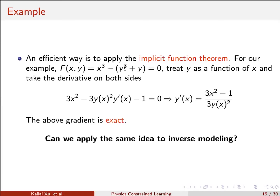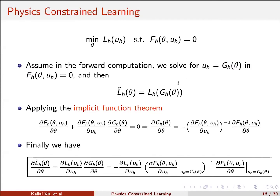A more efficient way is to apply the implicit function theorem. For example, for this function, you can recall from calculus that you can treat Y as a function of X and take derivatives on both sides. Then you get an equation, solve for Y-prime, and the gradient here is exact. The same idea applies to the physics-constrained optimization problem, and you can arrive at this equation.